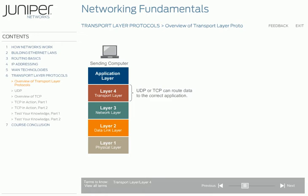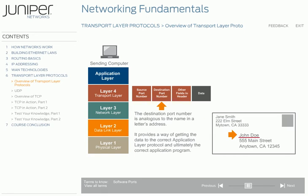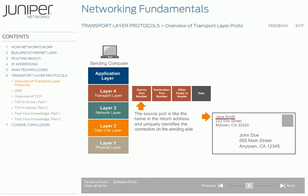Transport layer, or layer 4, protocols such as the User Datagram Protocol (UDP) and the Transmission Control Protocol (TCP) bridge the gap between the lower layers, which are responsible for data delivery, and the application layer, which interacts with application programs. Both UDP and TCP use software ports to help route data to the correct application program. The destination port number is analogous to the name in a letter's address and provides a way of getting the data to the correct application layer protocol and ultimately the correct application program. The source port is like the name in the return address and uniquely identifies the connection on the sending side.